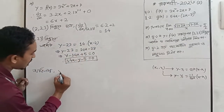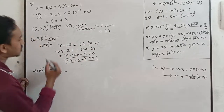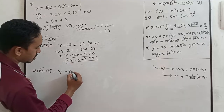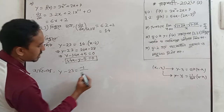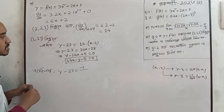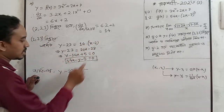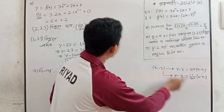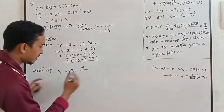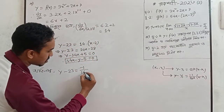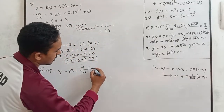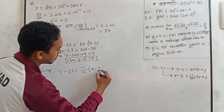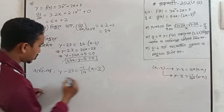For the normal line, y minus y1 equals slope, where the slope of the normal is minus 1 divided by 14, times x minus x1.